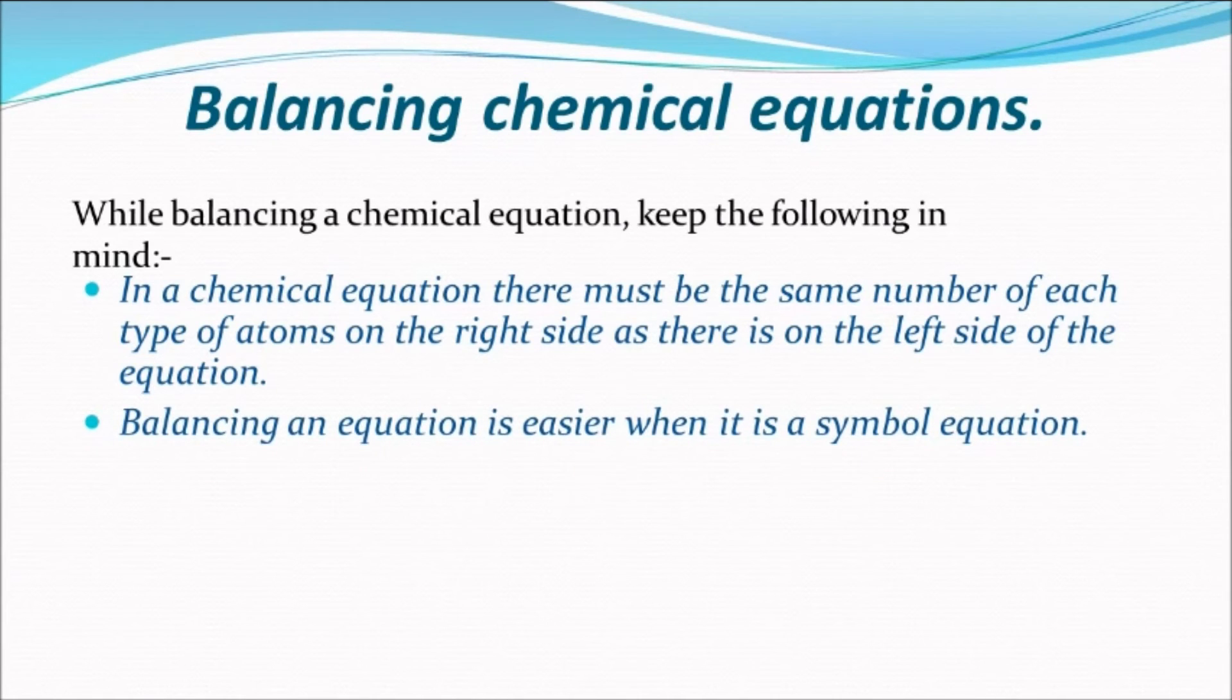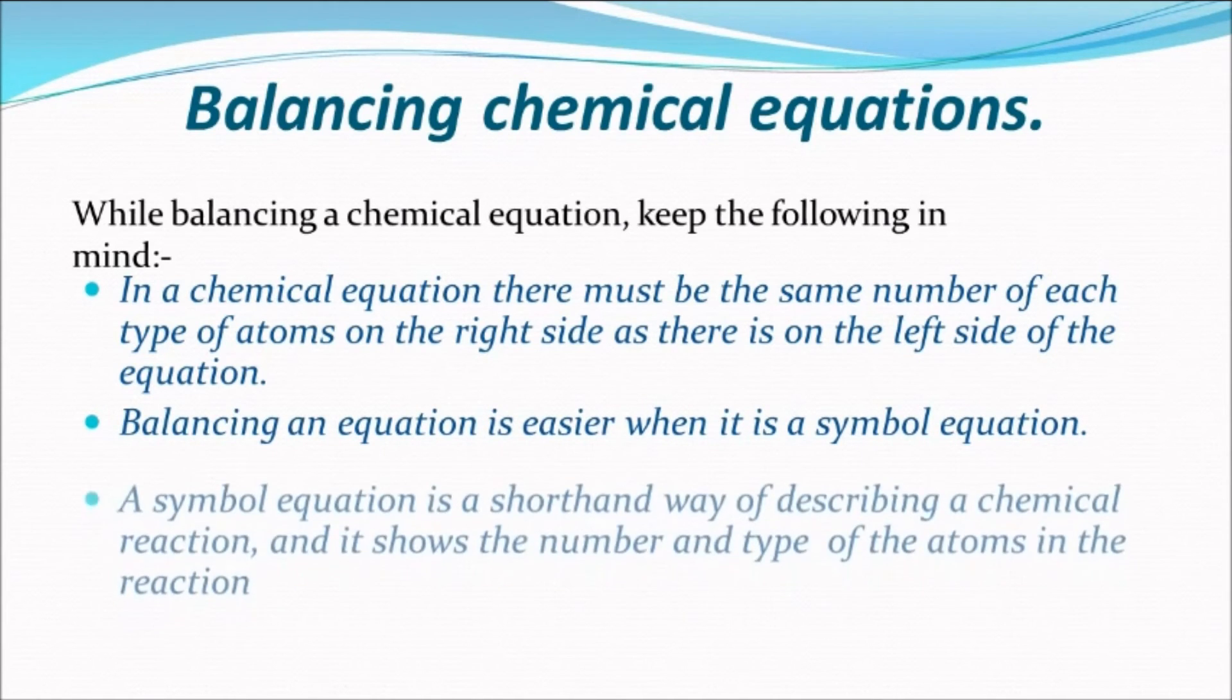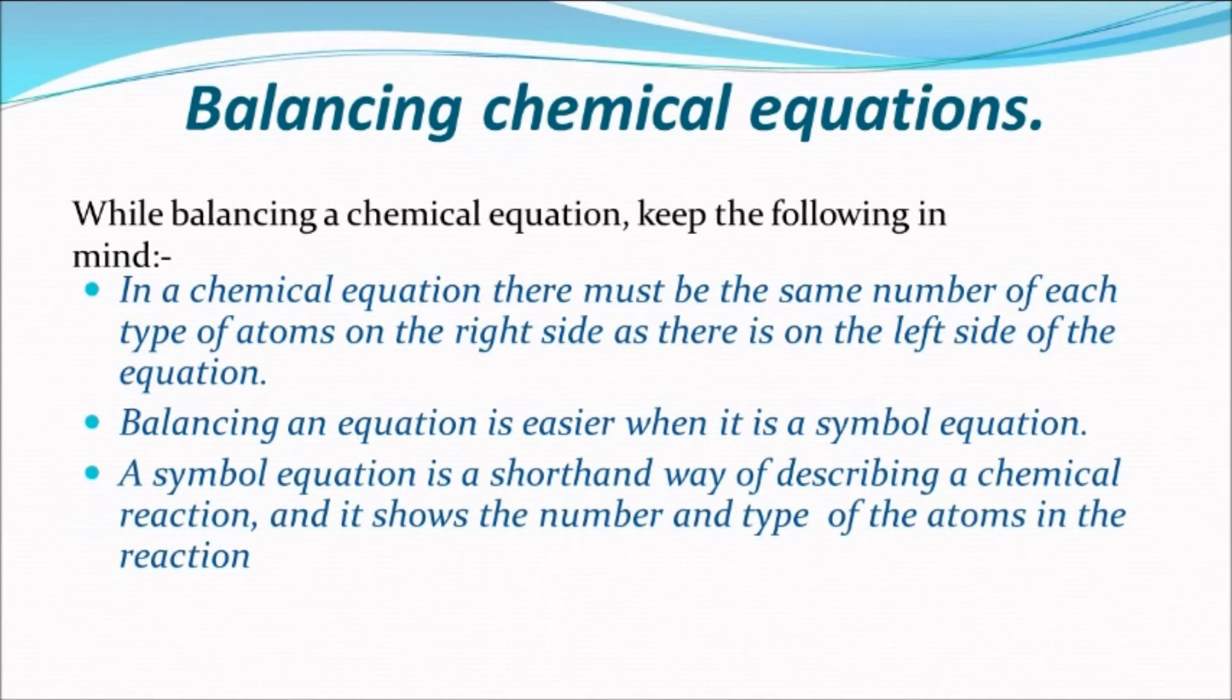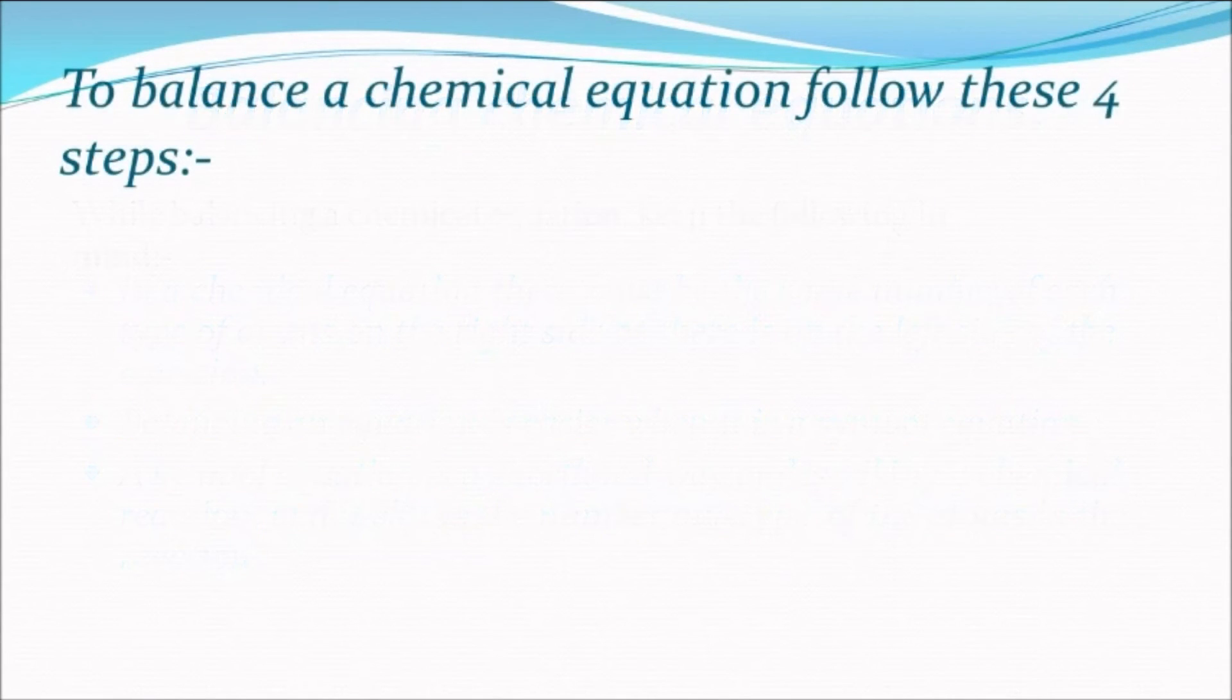Balancing an equation is easier when it is a symbol equation, as a symbol equation is a shortened way of describing a chemical reaction. It shows the number and type of atoms in the reaction.